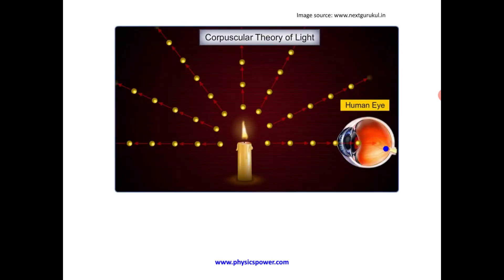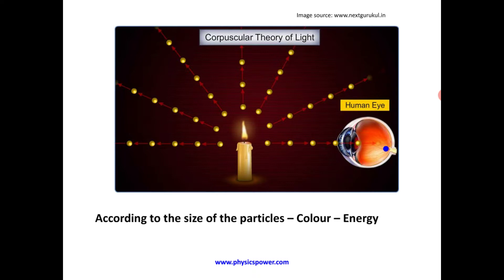Newton also analyzed light and gave the particle theory of light, known as the corpuscular theory. According to his theory, light consists of tiny particles, and energy depends on their size. Different sized particles exhibit different colors.